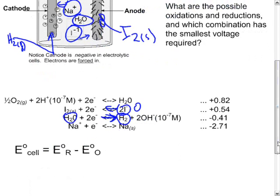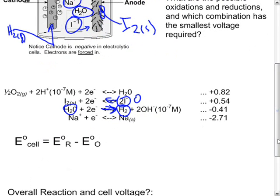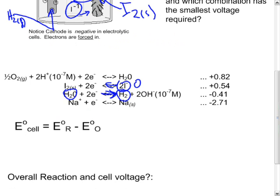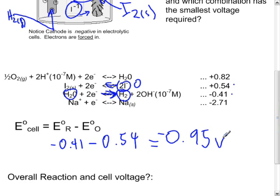The E naught for the entire cell is then the reduction. Now the reduction, which is negative 0.41 minus 0.54 for the oxidation, these two numbers, which is equal to 0.95 negative volts. So almost an entire volt.